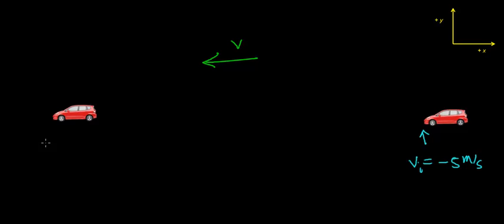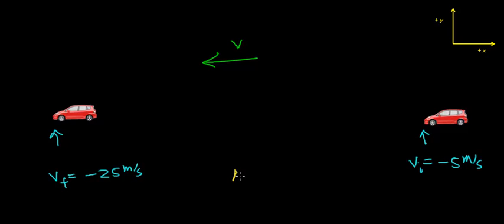This car reaches a final velocity of negative 25 meters per second. So this car goes from an initial velocity of negative 5 meters per second to a final velocity of negative 25 meters per second, and it takes 4 seconds to change velocity from negative 5 to negative 25 meters per second. The question is: what is the acceleration of this object, and in which direction must it accelerate for its velocity to increase?